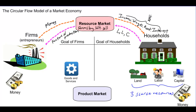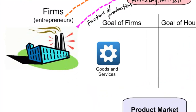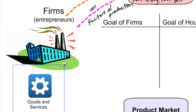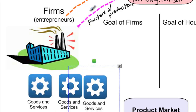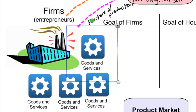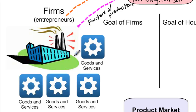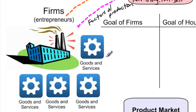Now, what good is money if not to consume with? This brings us to the product market. With the land, labor, and capital acquired in the resource market, firms can begin producing goods and services. Now firms have goods and services to sell — because a market economy is all about selling. Households sell resources in the resource market, and firms sell goods and services in the product market.